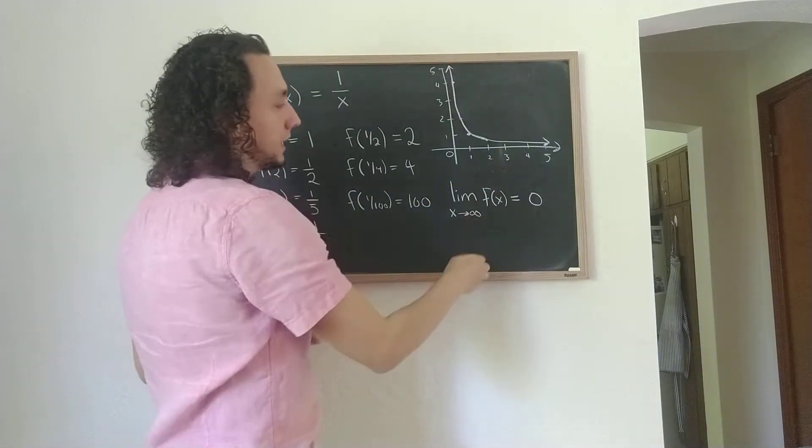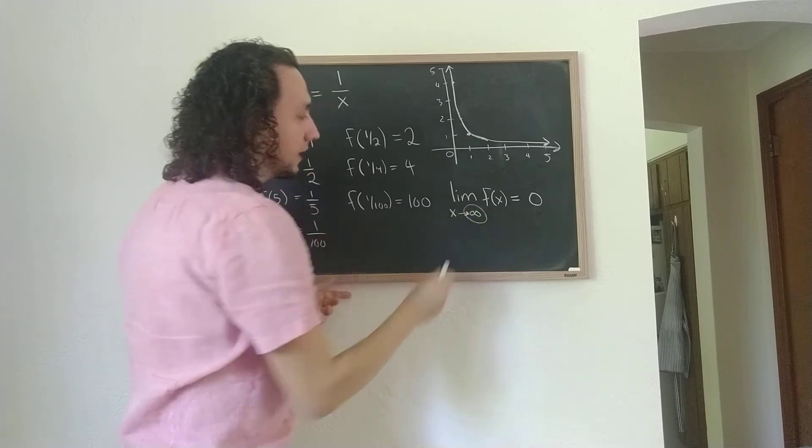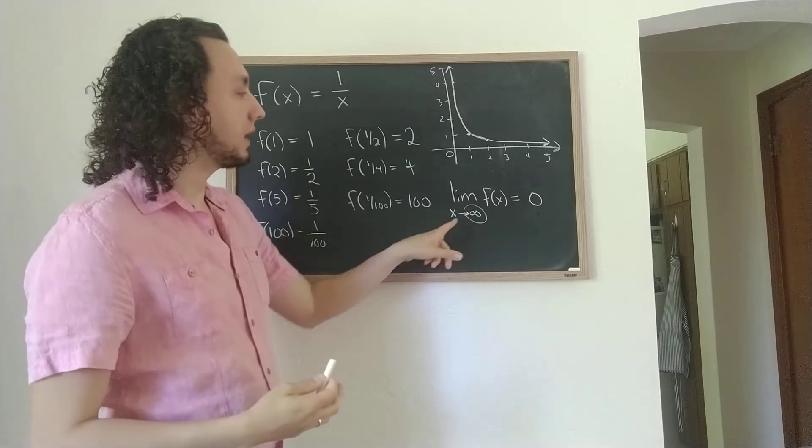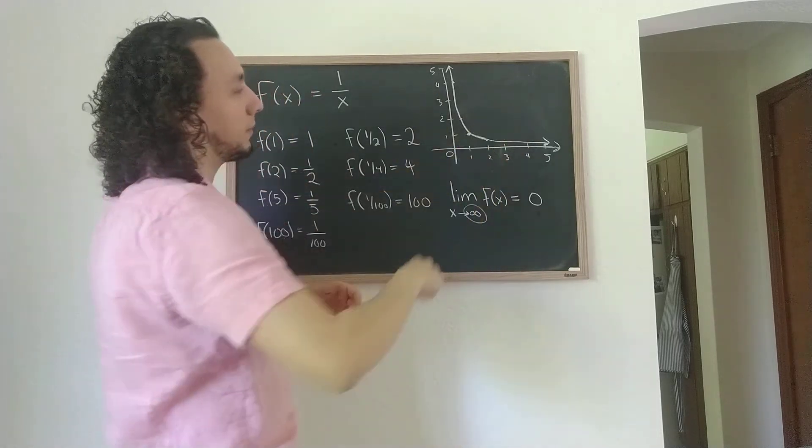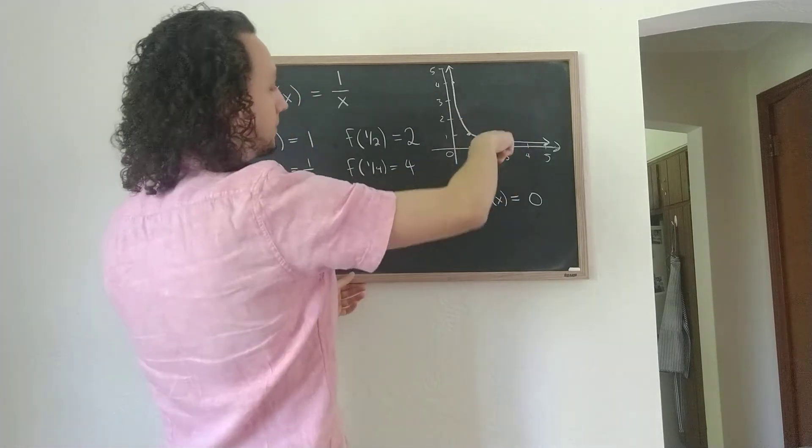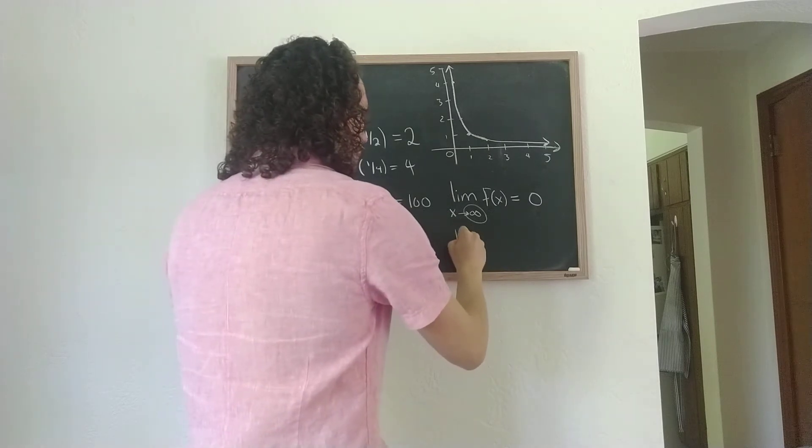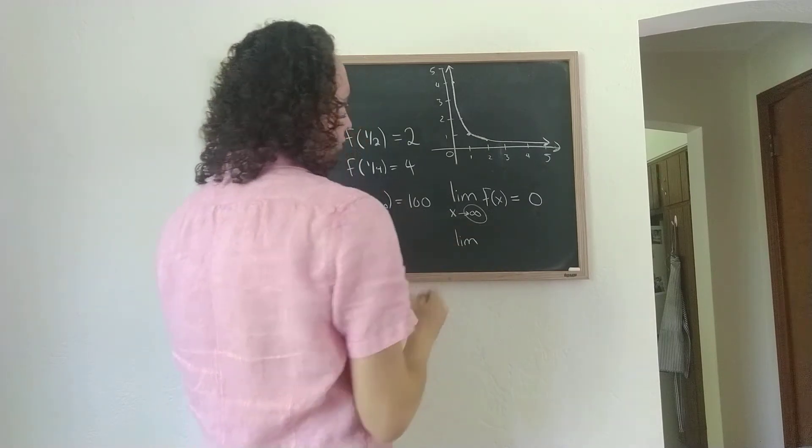So that's how we express that. So this is one way that infinity comes up in math, as a notion of getting larger and larger. And the other way that it comes up, I mean, there are many ways it comes up in math, but the other way it comes up in this picture